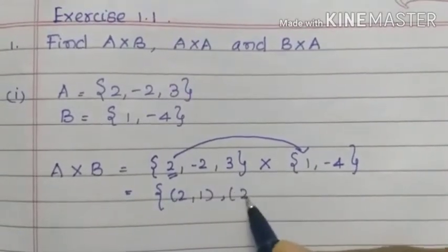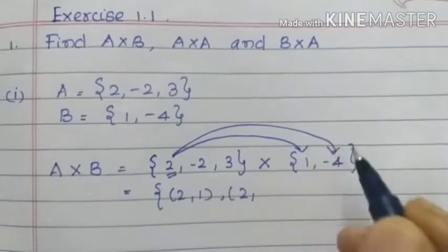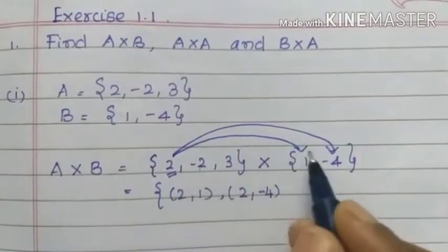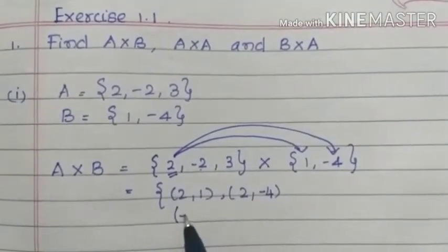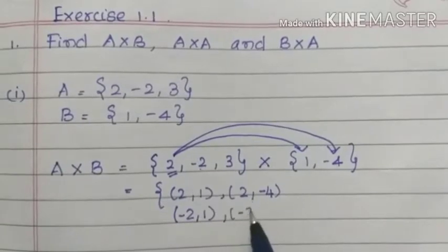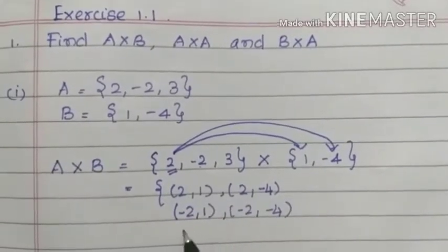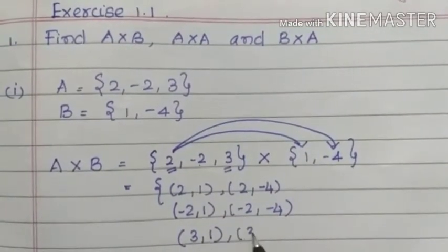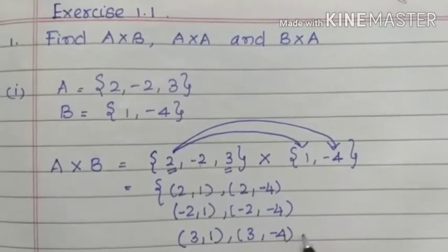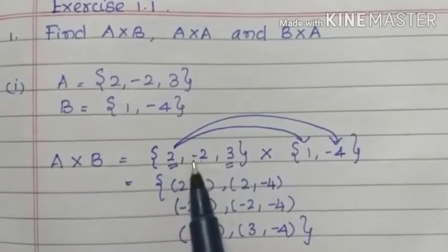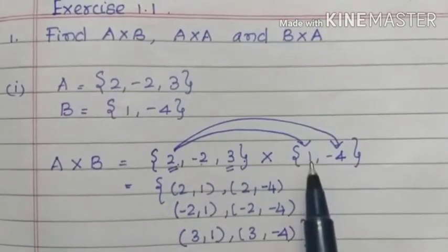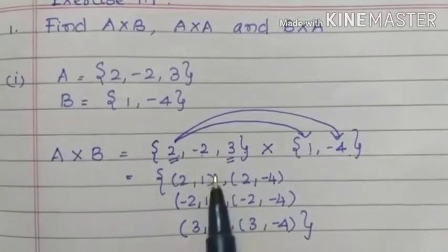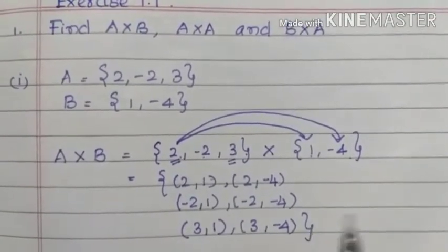Continuing the ordered pairs: 1, 2, minus 4; then 2, minus 2, 1; then 1, 2, minus 4; then 3, 1; then 3, minus 4. So this is the resultant. The resultant set has 6 elements.